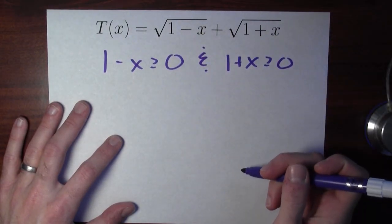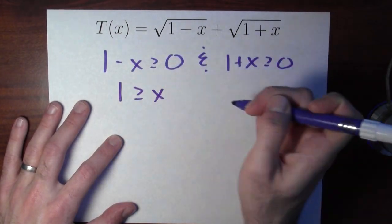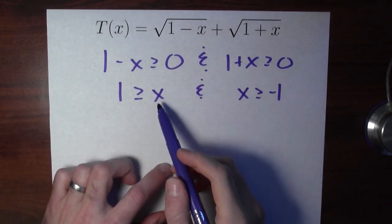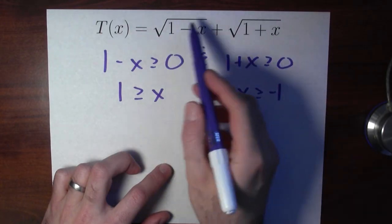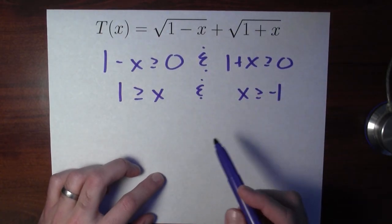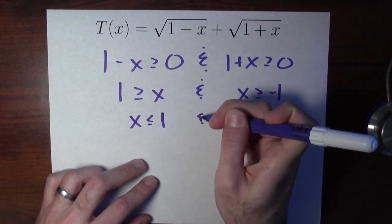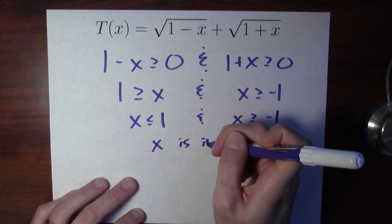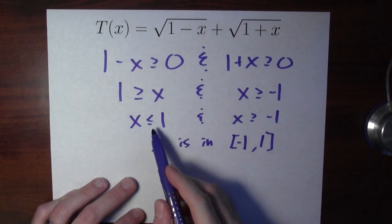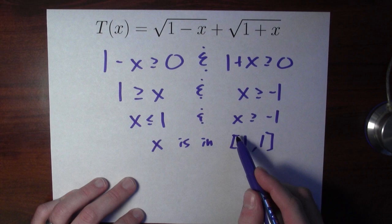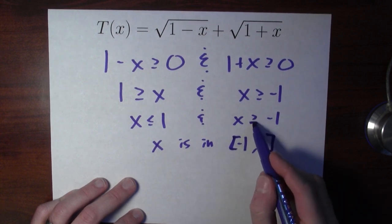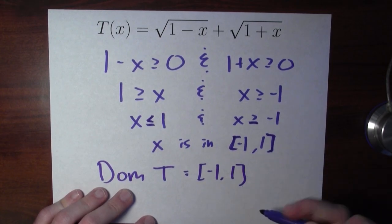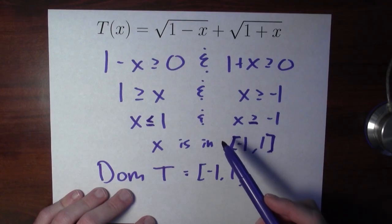I'll put an 'and' between them. I can add x to both sides of the first inequality and get that 1 is bigger than or equal to x, i.e., x is less than or equal to 1. And I can subtract 1 from both sides of the second and get x is bigger than or equal to minus 1. I need x less than or equal to 1 and x bigger than or equal to minus 1 in order to evaluate this function. I can write this as x being in the interval from minus 1 to 1, using square brackets because I have greater than or equal to on both sides. So the domain of t is the interval from minus 1 to 1.